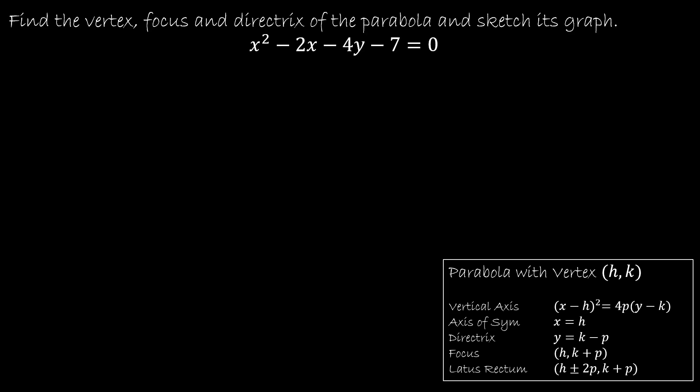Let's look at our first example together. We want to find the vertex, focus, and directrix, and also sketch the graph. So I'm going to go through all of these things: the axis of symmetry, the directrix, the focus, and the latus rectum — we're going to do them all. The equation is given not in standard form but in general form, which isn't super helpful, so we have to do some work.